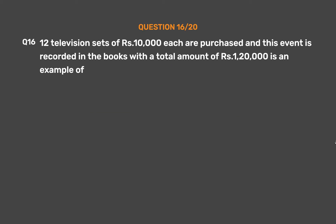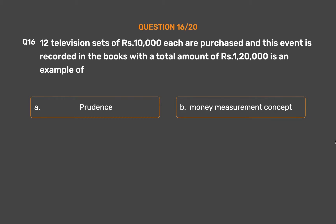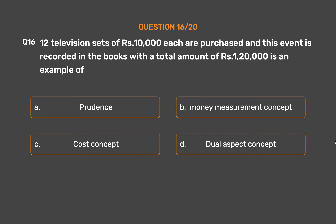Question No. 16: 12 television sets of 10,000 rupees each are purchased and this event is recorded in the books with a total amount of 1,20,000 rupees. This is an example of which concept? Option A: Prudence. Option B: Money Measurement Concept. Option C: Cost Concept. Option D: Dual Aspect Concept.